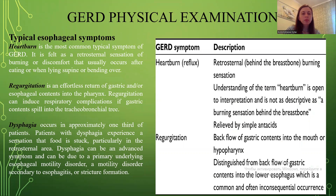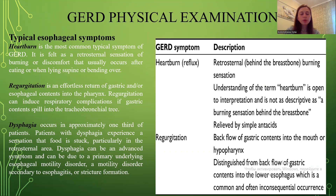Regarding physical examination and typical esophageal symptoms: heartburn is the most common typical symptom of GERD. It is felt as a retrosternal sensation of burning or discomfort that usually occurs after eating or when lying down, stooping, or bending over. Regurgitation is the effortless return of gastric and/or esophageal contents into the pharynx; it can induce respiratory complications if gastric contents spill into the tracheobronchial tree. Dysphagia occurs in approximately one-third of patients, who experience a sensation of food being stuck, particularly in the retrosternal area. Dysphagia can be an advanced symptom and may be due to a primary underlying esophageal motility disorder.